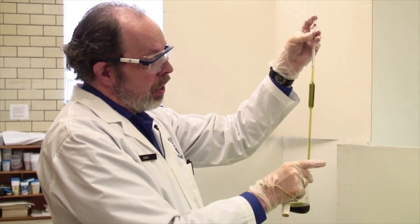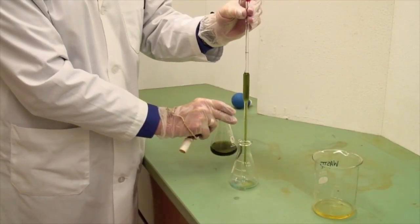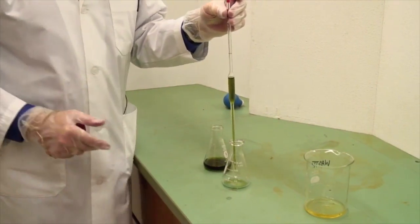If there's a drip on the tip, touch it to the dispensing vessel. Place it over the receiving vessel and allow it to flow out.